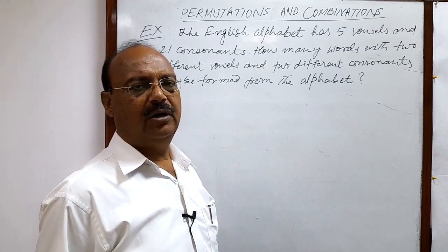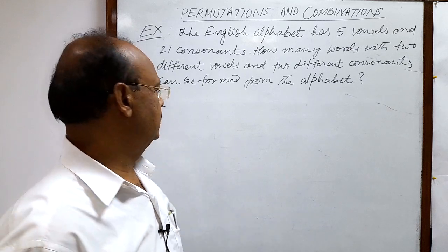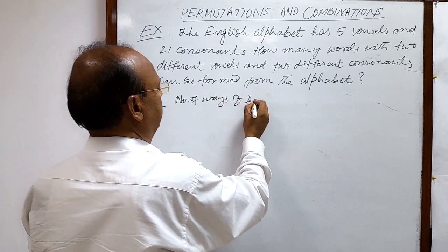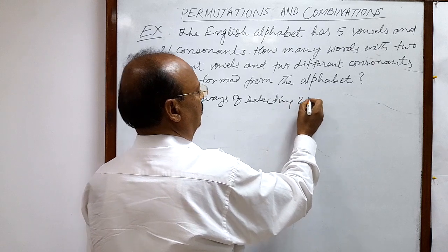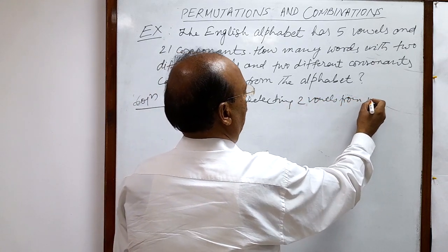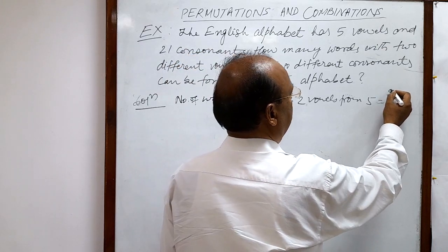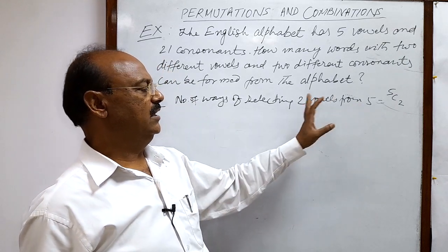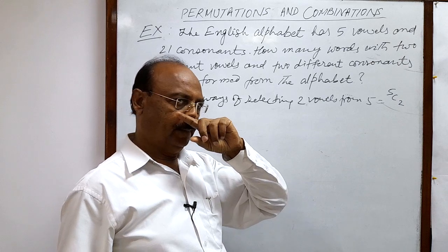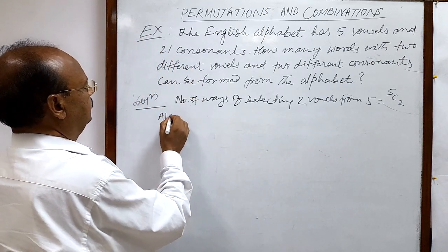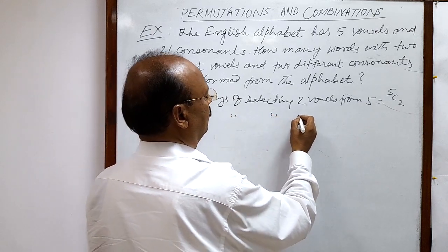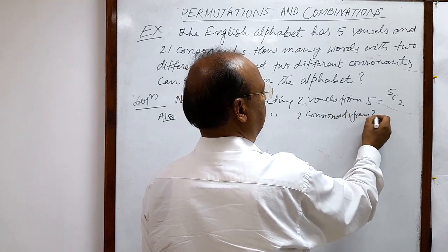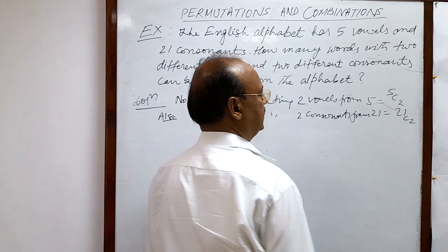First, let us make a selection of 2 vowels and 2 consonants. The number of ways of selecting 2 vowels from 5 is 5C2, since the total number of vowels is 5. Similarly, the number of ways of selecting 2 consonants from 21 consonants is 21C2.